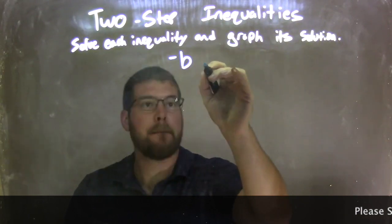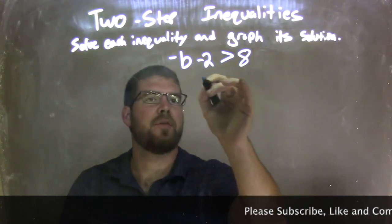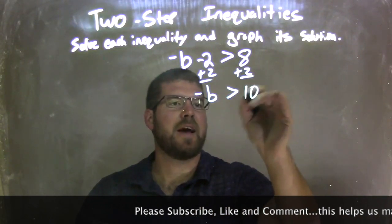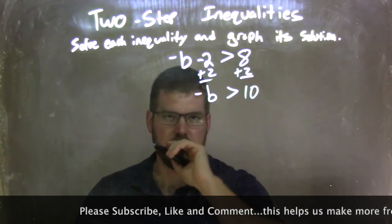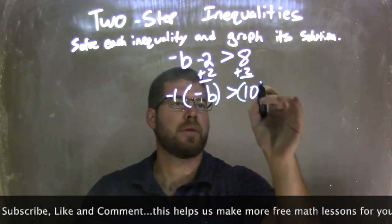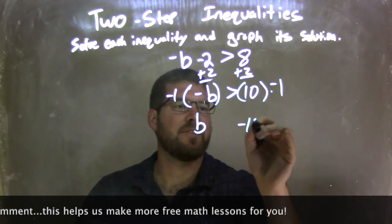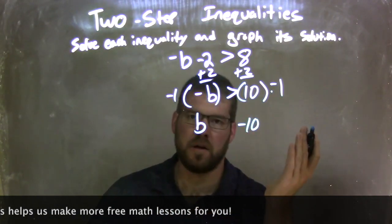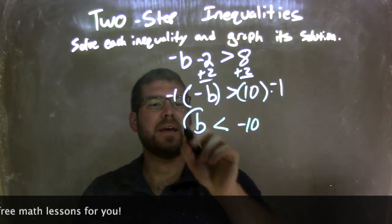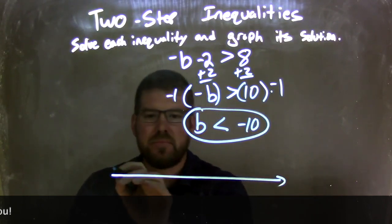Negative B minus 2 is greater than 8. First step: add 2 to both sides, leaving me with negative B is greater than 10. But now I need to get rid of that negative — I'm going to multiply by negative 1 on both sides. That gives me positive B on the left and negative 10 on the right. Since we multiplied over an inequality by a negative number, we flip from greater than to less than. Now we have B is less than negative 10. So now I need to make my number line and graph this.